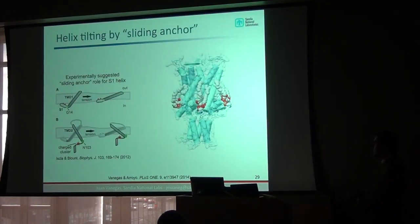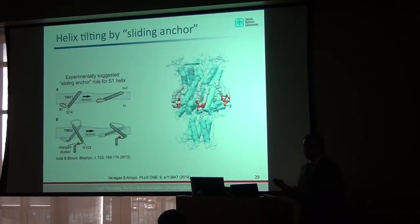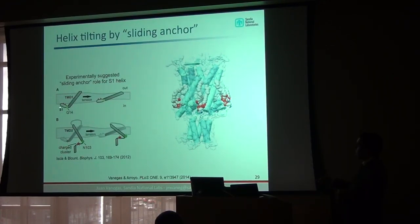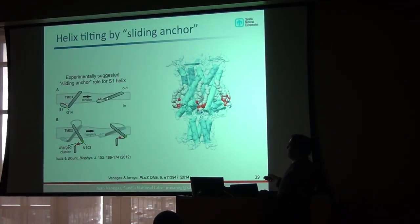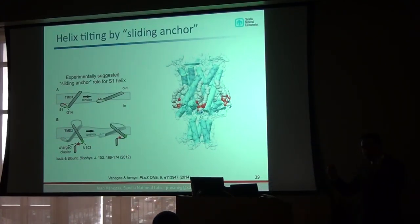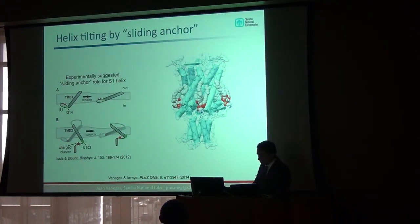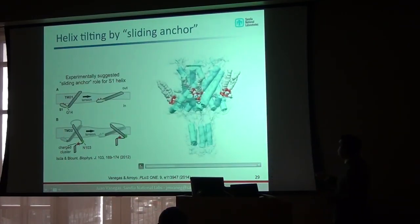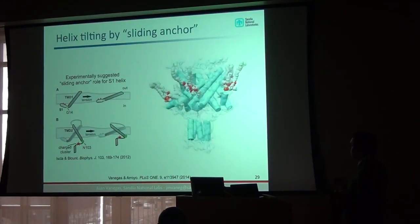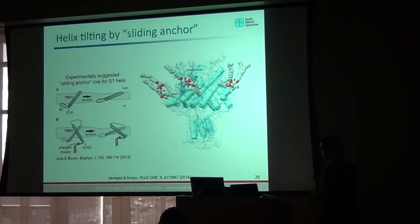Experimentally, it has been predicted that for the channel to open, one part of the protein — where we see the strong lipid association — acts as a sliding anchor. As tension is applied, it can slide sideways and help tilt the transmembrane helix to open the channel like the iris of a camera. Drawing these subunits as helices, we see that as we apply pulling forces on the lipids, there is an increase in the tilt of the different subunits as the channel gates, confirming this experimental prediction.